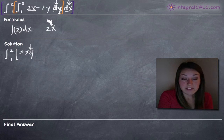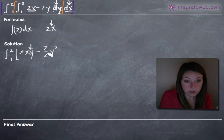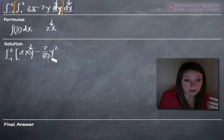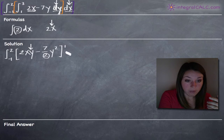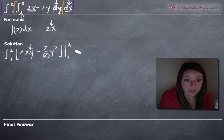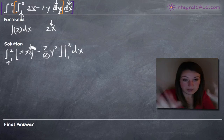The integral of negative 7y with respect to y is pretty standard. We add 1 to the exponent to get y squared, and divide by the new exponent, so we get negative 7 halves y squared. We're evaluating this on the range 1 to 3, which are our inside limits of integration. We keep the dx notation on the outside.